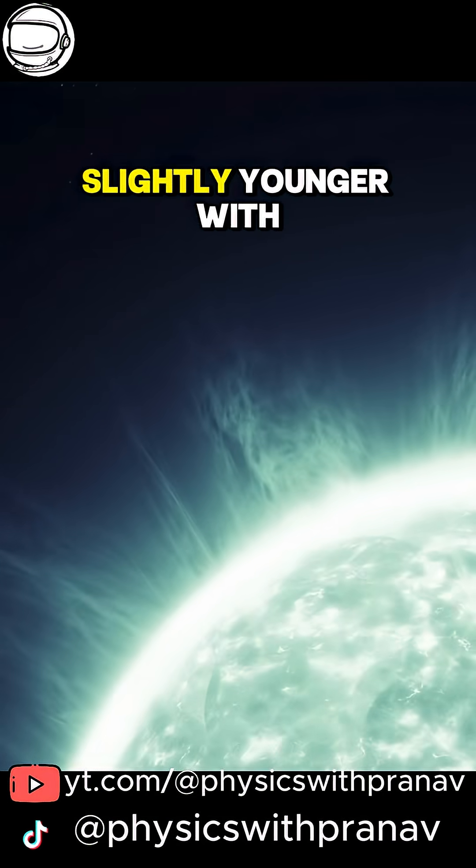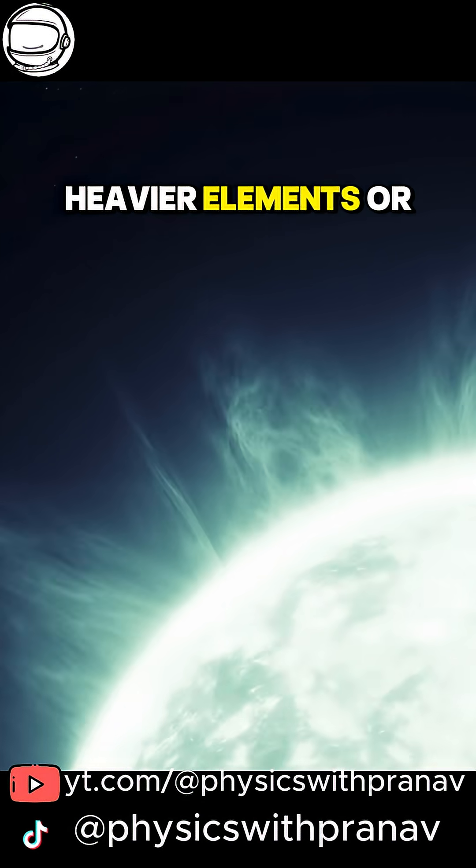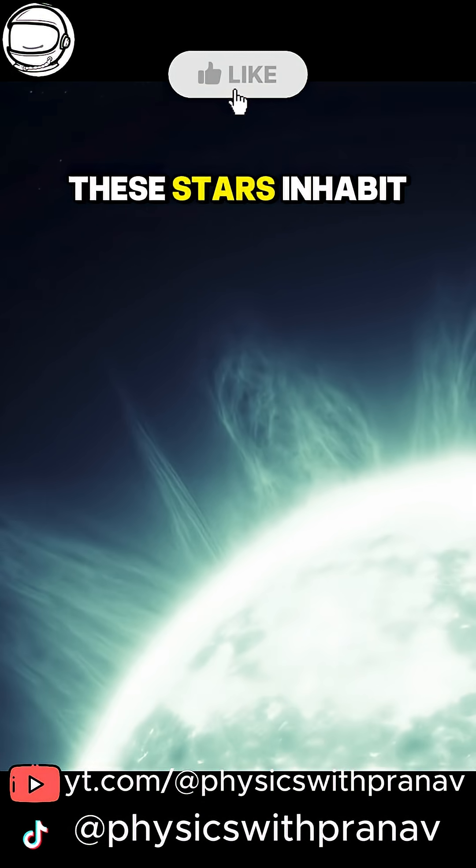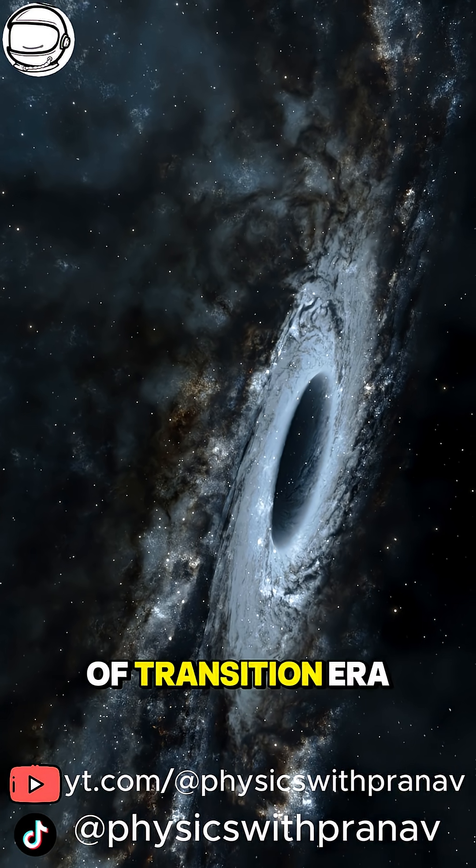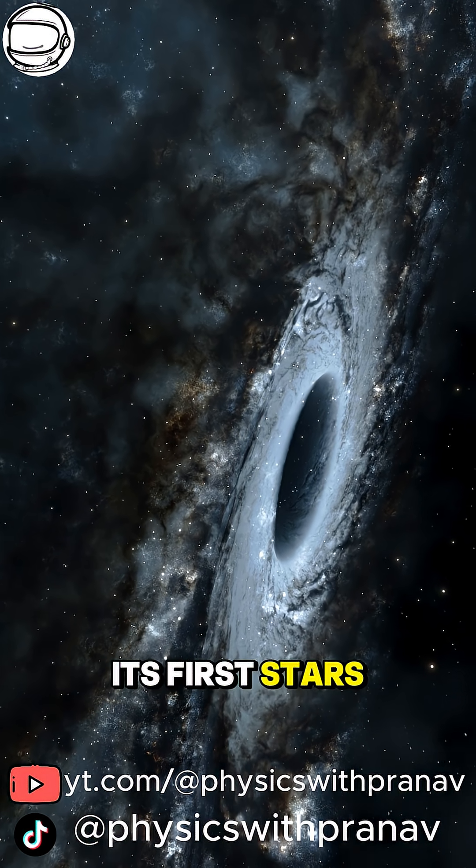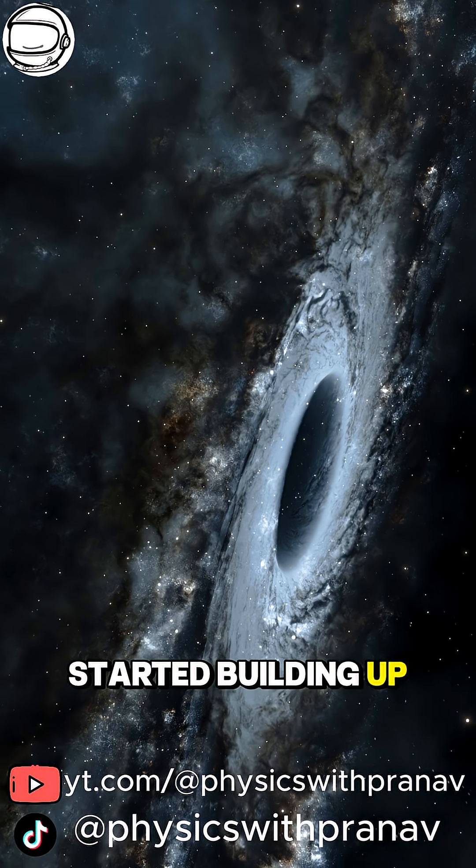Next came Population 2 stars, slightly younger, with small amounts of heavier elements or metals. These stars inhabit early galaxies in globular clusters, and they show us the transition era. The universe already had its first stars, and heavier elements started building up at this point.